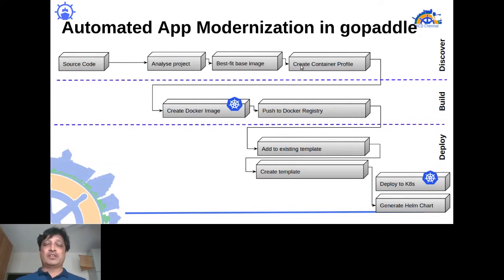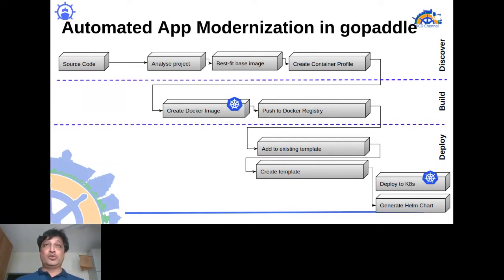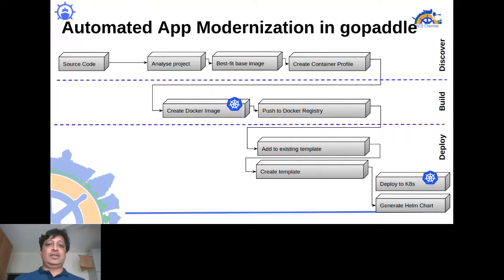GoPaddle creates a container profile capturing your environment settings, security details such as username, password, group ID, and user ID, along with resource requirements — memory, disk space, and CPUs needed. Using this profile, it performs a build in the Kubernetes environment, resulting in an actual Docker image built from your source code using all captured build parameters and tools.